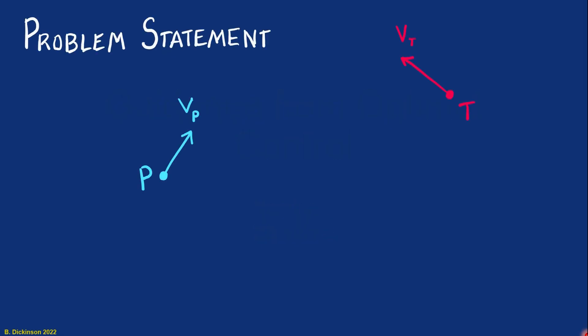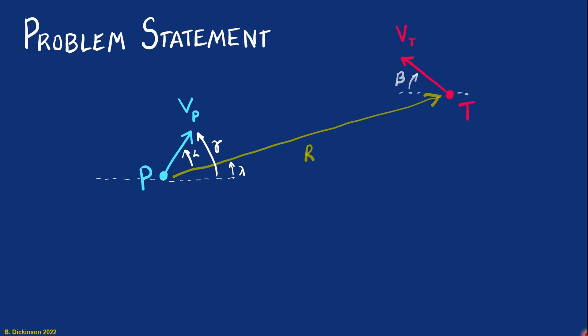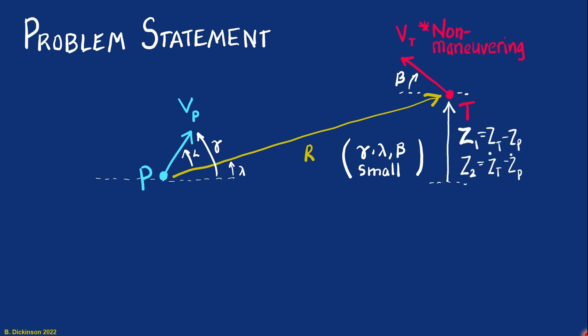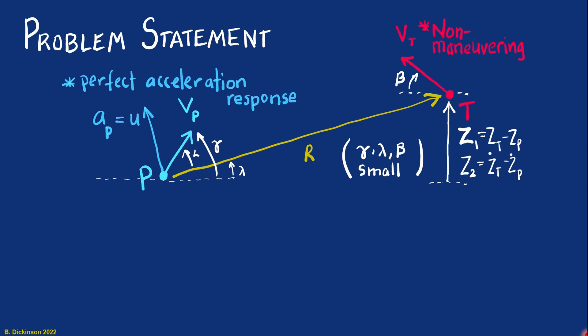In the previous modules we looked at a pursuer-target engagement where the target is non-maneuvering. We assumed that the angles of the engagement were small, defined z1 as a relative position and z2 as a relative velocity. This was confined to the vertical plane given the small angle assumption, and also we're making a perfect acceleration response, meaning that whatever control we derive we're able to instantaneously achieve at that specified time.